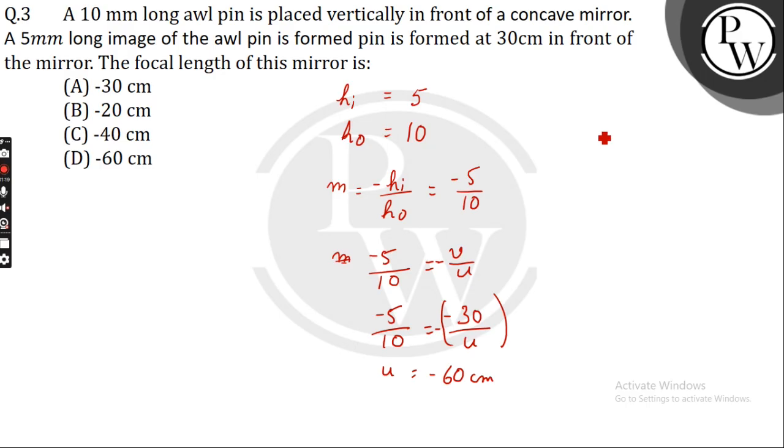Now, using the mirror formula, 1 by f equals 1 by v plus 1 by u. So 1 by f equals 1 by minus 30 plus 1 by minus 60.